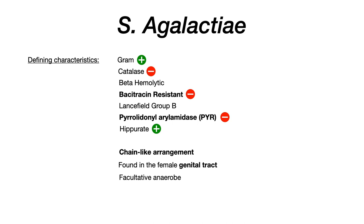Strep agalactiae, like strep pyogenes, exists in chains. Where it differs is that it's found in the female genital tract — it colonizes the vagina. This will be important for the clinical diseases it causes. Also, it's a facultative anaerobe. So the big things to keep in mind are: bacitracin resistant, PYR negative, and hippurate positive.